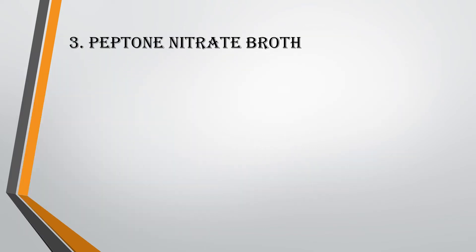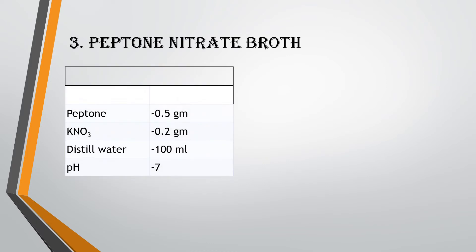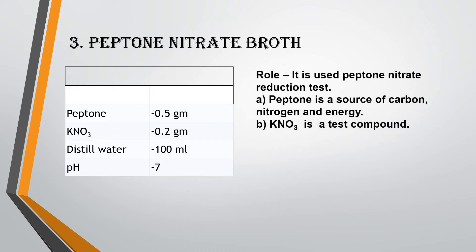The third medium is Peptone Nitrate Broth. The components are: Peptone 0.5 g, KNO3 0.2 g, Distilled Water 100 ml, and pH 7. This medium is used in the Peptone Nitrate Reduction Test. Peptone acts as a source of carbon, nitrogen, and energy, and KNO3 (Potassium Nitrate) is used as the test component.